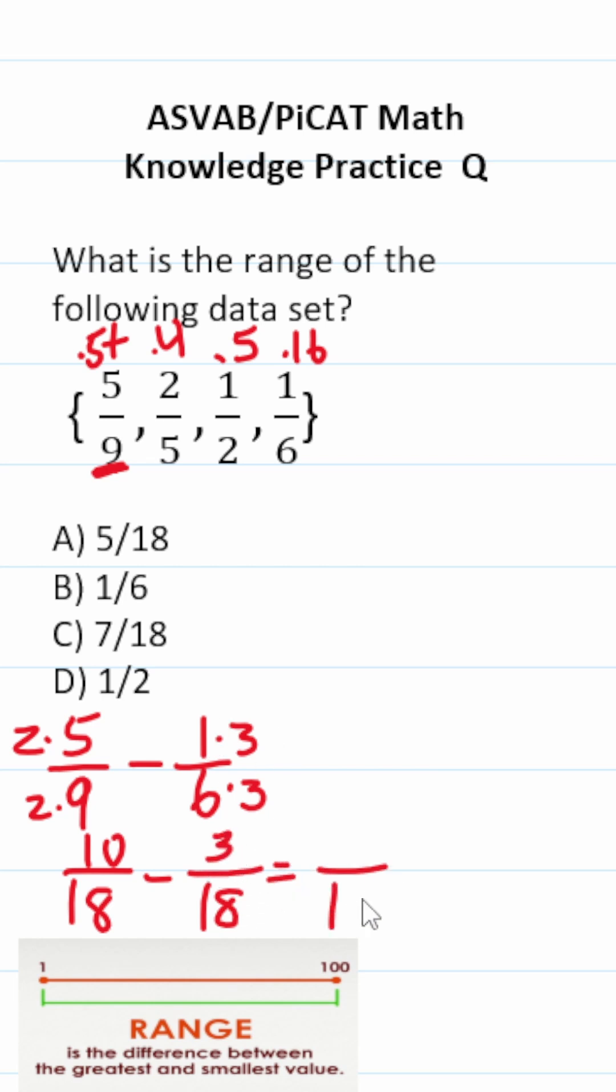When we subtract fractions, we keep our denominator the same. Then we subtract our numerators. 10 minus three is seven. So this one is C. The range is seven over 18.